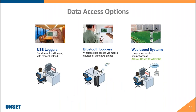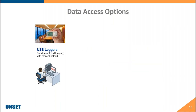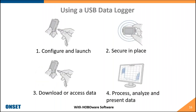There are a few ways to access data from our loggers: USB loggers, Bluetooth loggers, and web-based loggers. Our Bluetooth data loggers can be part of a remote monitoring solution. USB data loggers are ideal for short-term trend logging with manual offload — you connect a USB Mini-B cable to a computer to configure and launch the device, secure it at its deployment site, then download the data to our HoboWare software to process, analyze, and create presentation-grade reports.